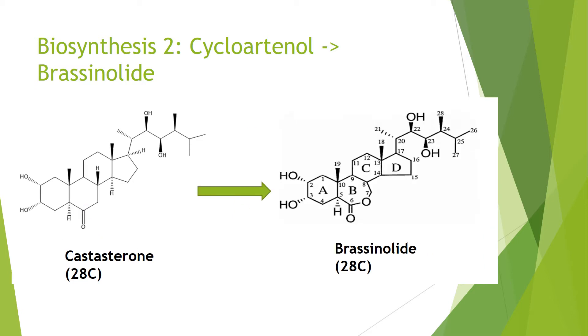Castasterone to brassinolide — this is the key, first-discovered brassinosteroid. There is no change in the number of carbons; all that is really done is that ring B becomes a cyclic ester.